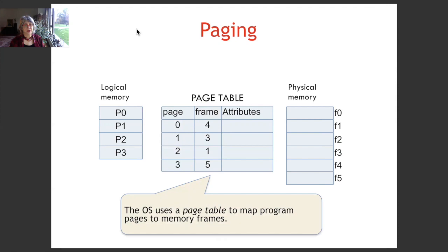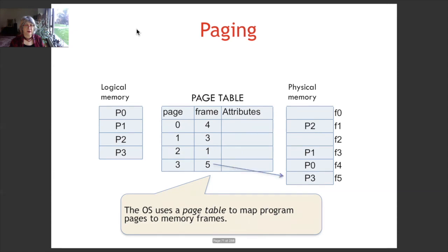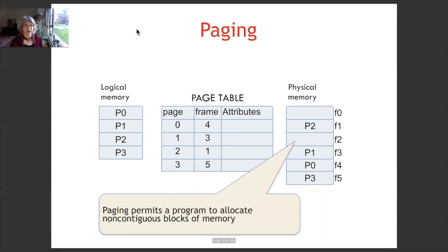The operating system uses a page table to map program pages to memory frames. Page 0 is loaded to frame 4, so in the page table it is shown that it is stored in that frame. Page 1 is loaded in frame 3, page 2 in frame 1, and page 3 in frame 5. Paging permits a program to allocate non-contiguous blocks of memory. Notice that in this example, p0 is loaded in frame 4, but page 1 is not stored in the consecutive frame.